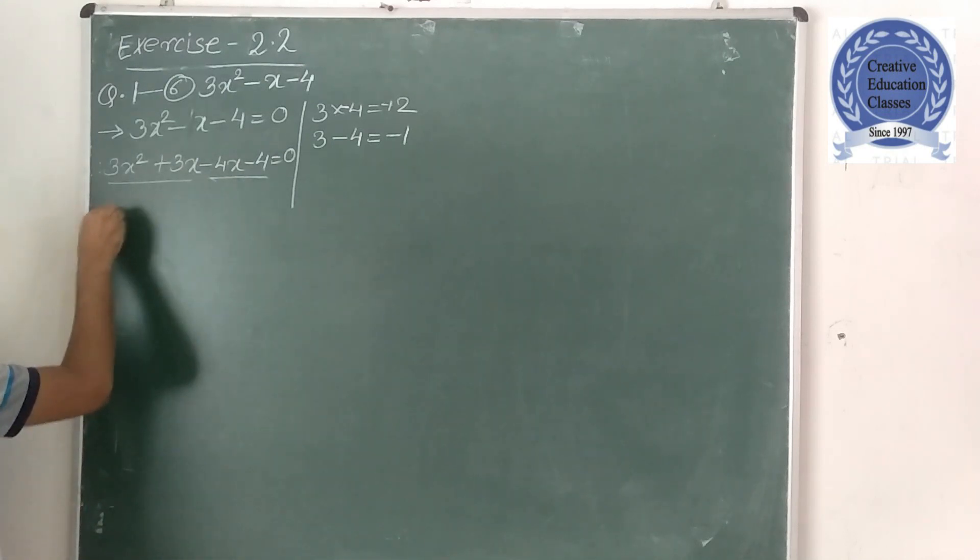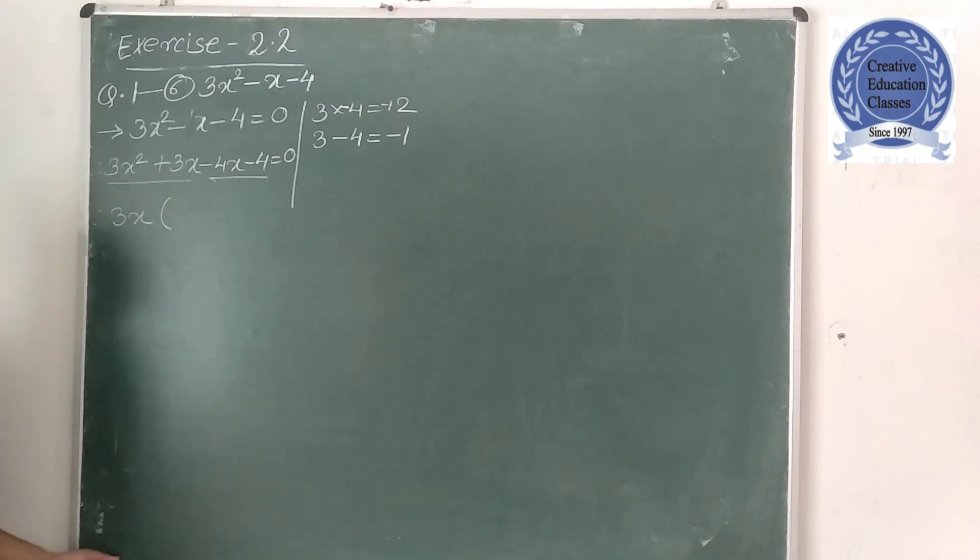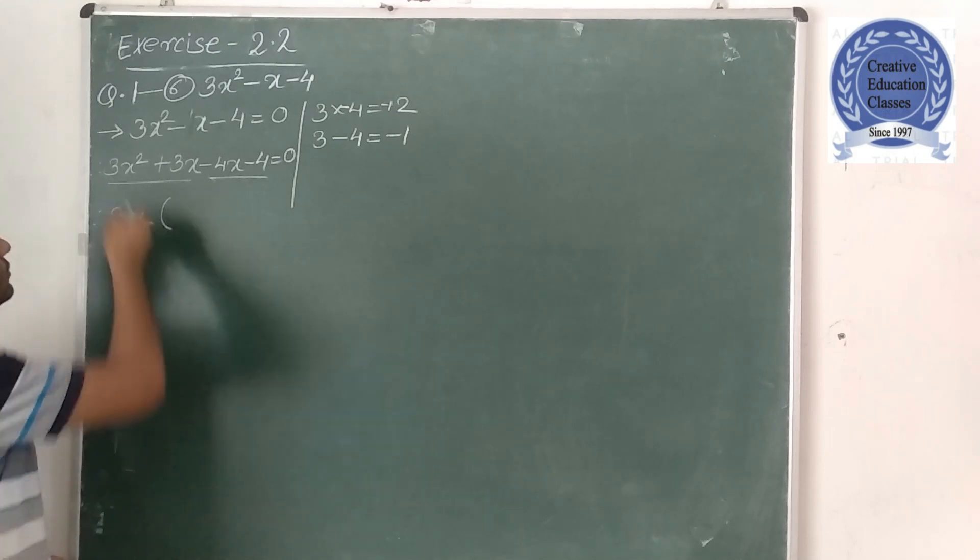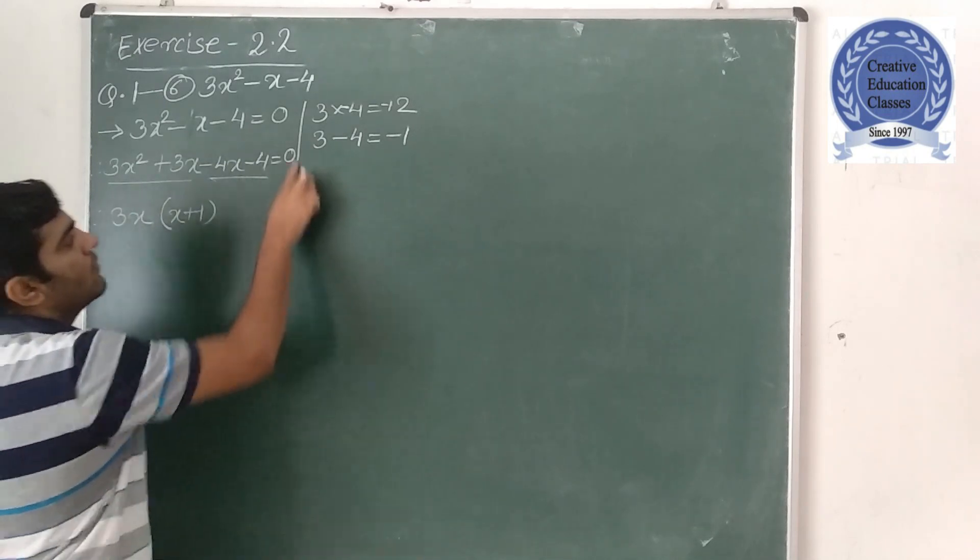So 3x and x common, or x square and x. So what is remaining in the bracket? So 1 will remain here after dividing by x. And here also nothing means 1 will remain.